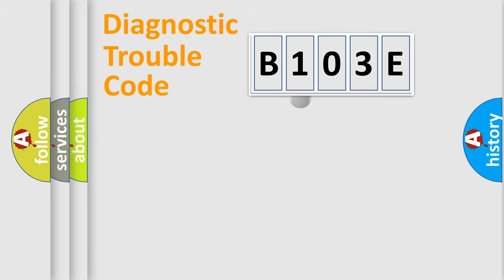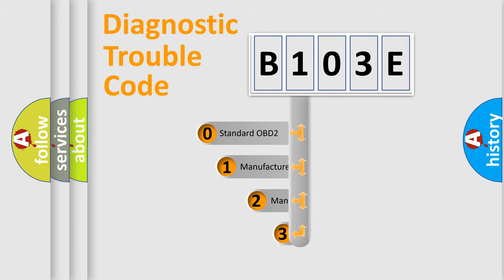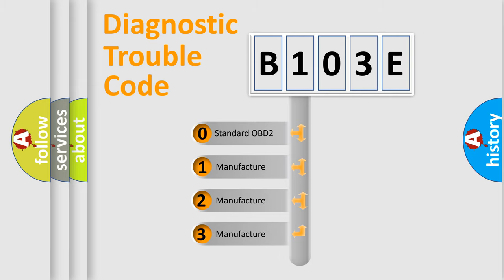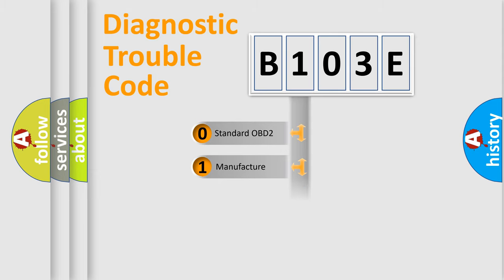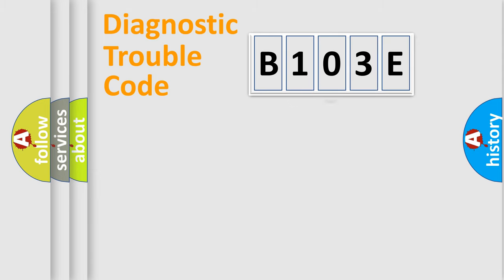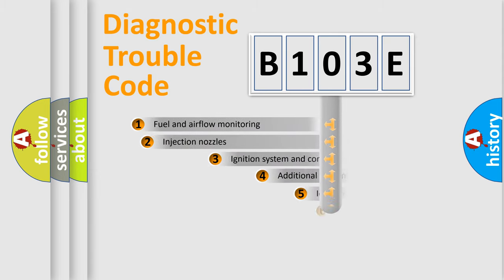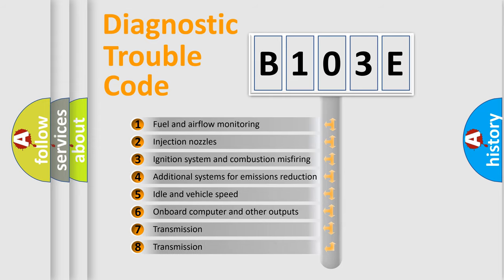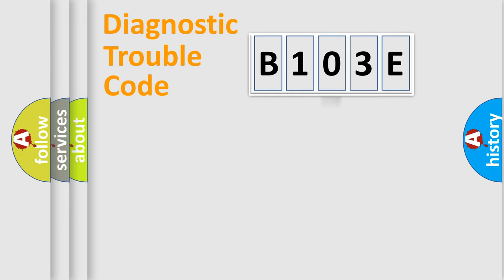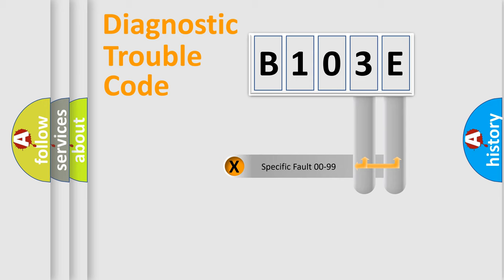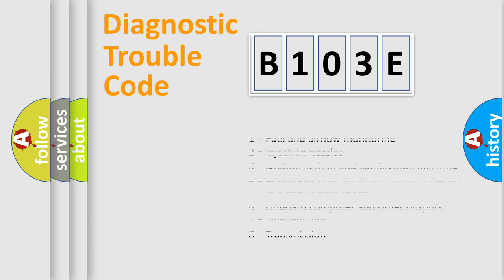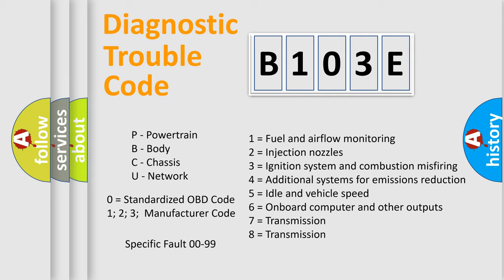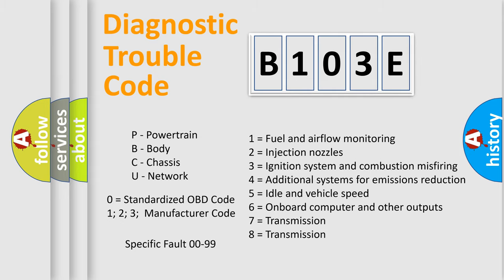This distribution is defined in the first character of the code. If the second character is expressed as zero, it is a standardized error. In the case of numbers 1, 2, or 3, it is a more specific expression of the car-specific error. The third character specifies a subset of errors. This distribution is valid only for the standardized DTC code, and only the last two characters define the specific fault of the group. Such a division is valid only if the second character code is expressed by the number zero.